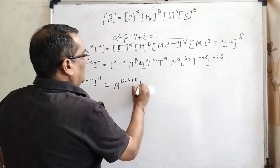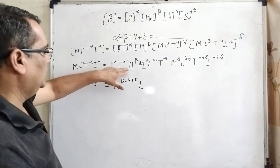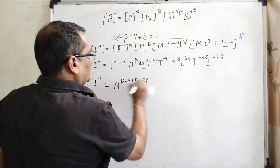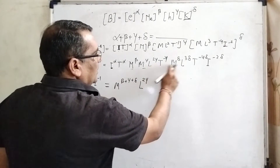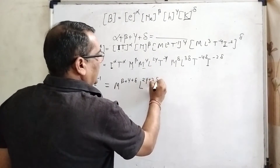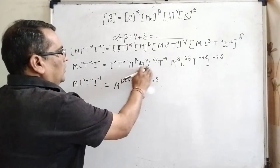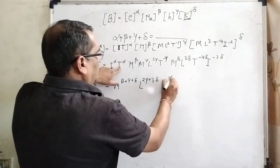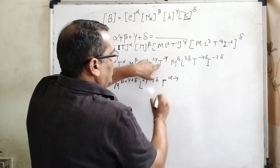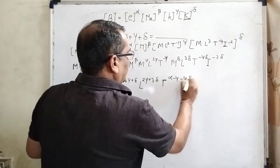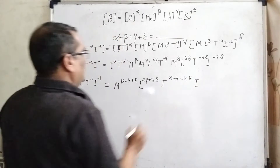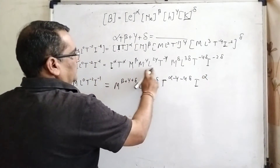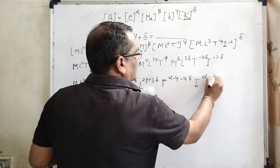By using the exponent law, same bases have their powers added. For L: the power is 2γ + 3δ. For T: the power is α − γ − 4δ. For I: the power is α − 2δ.